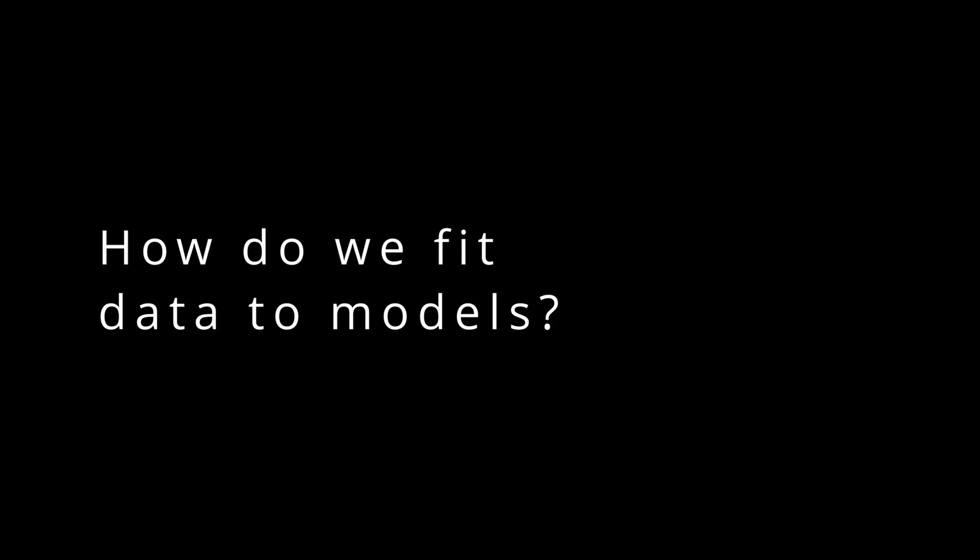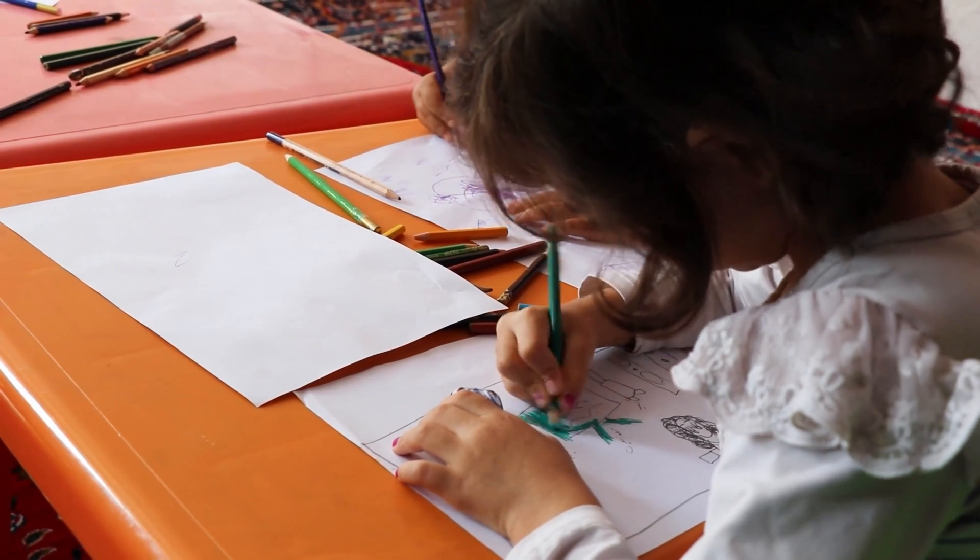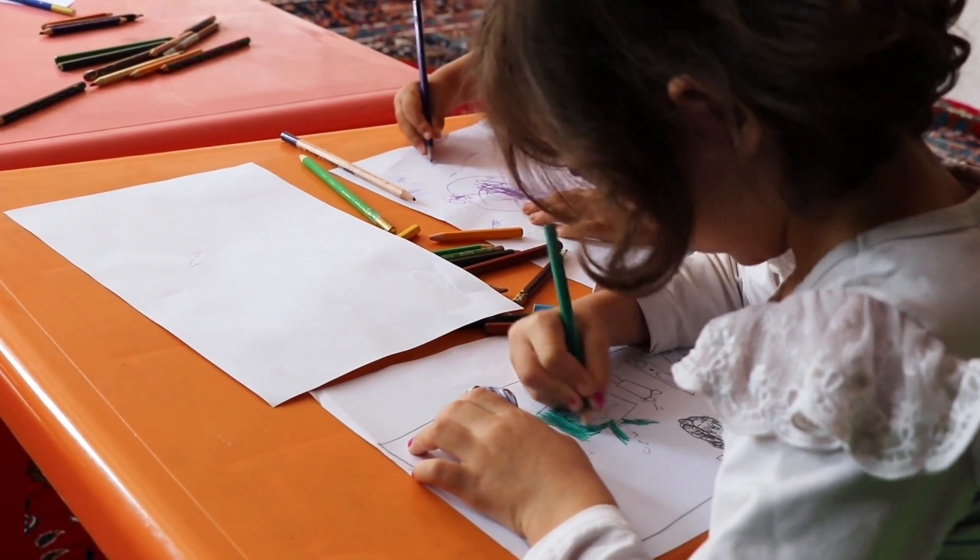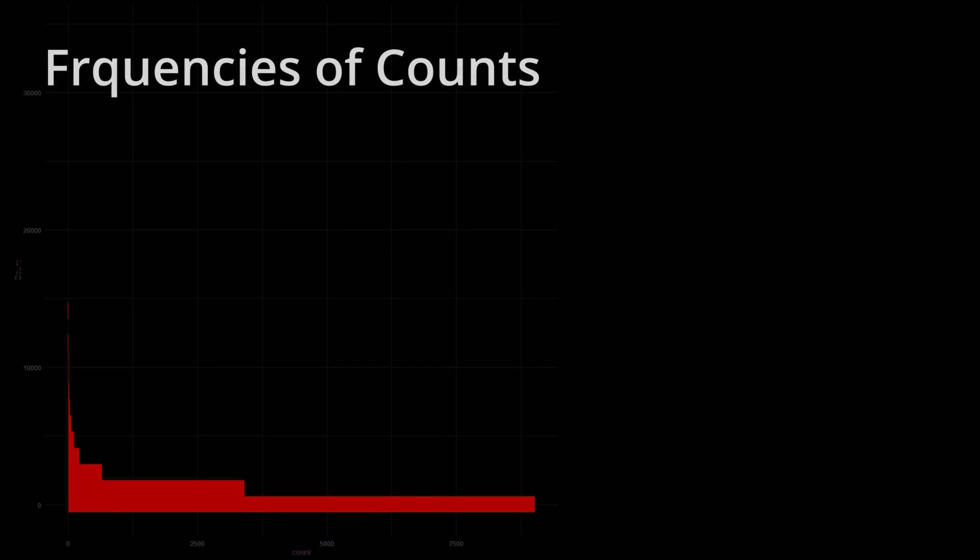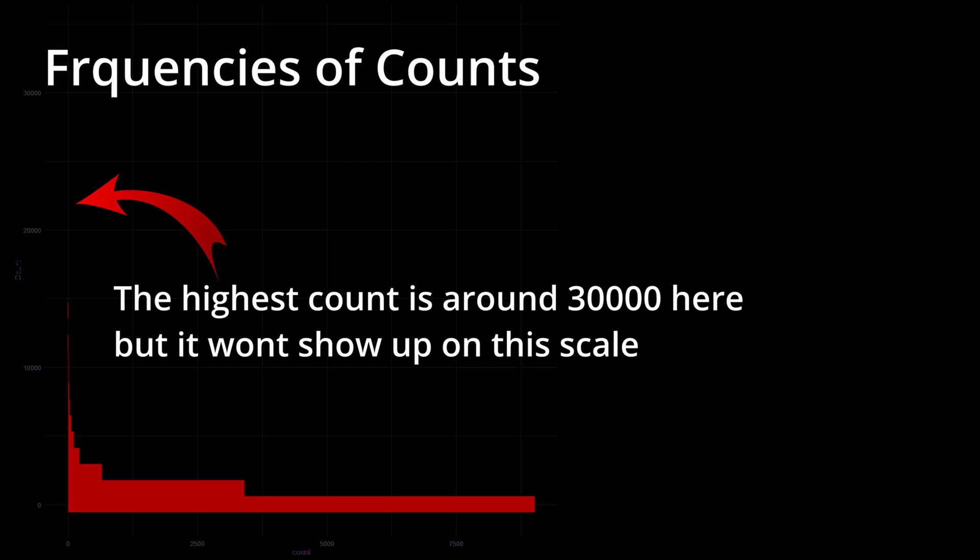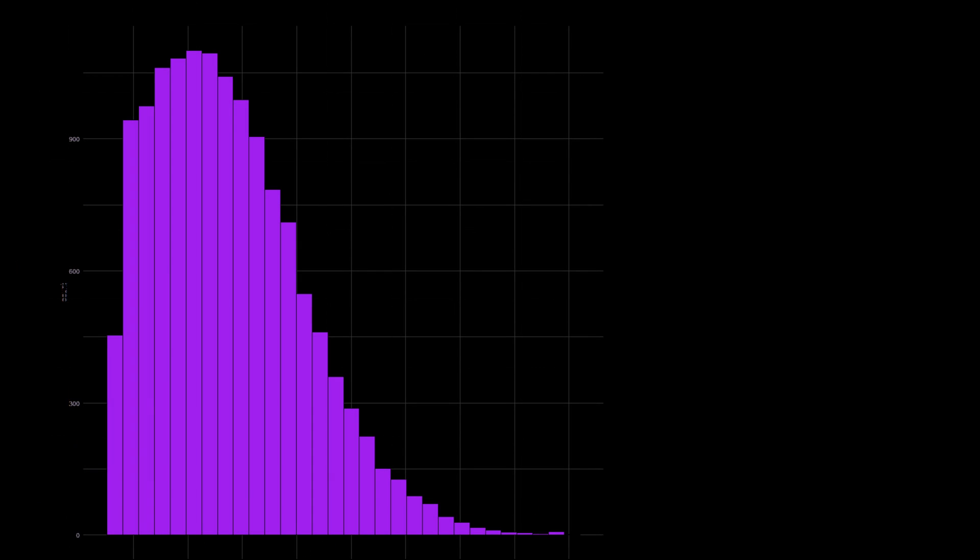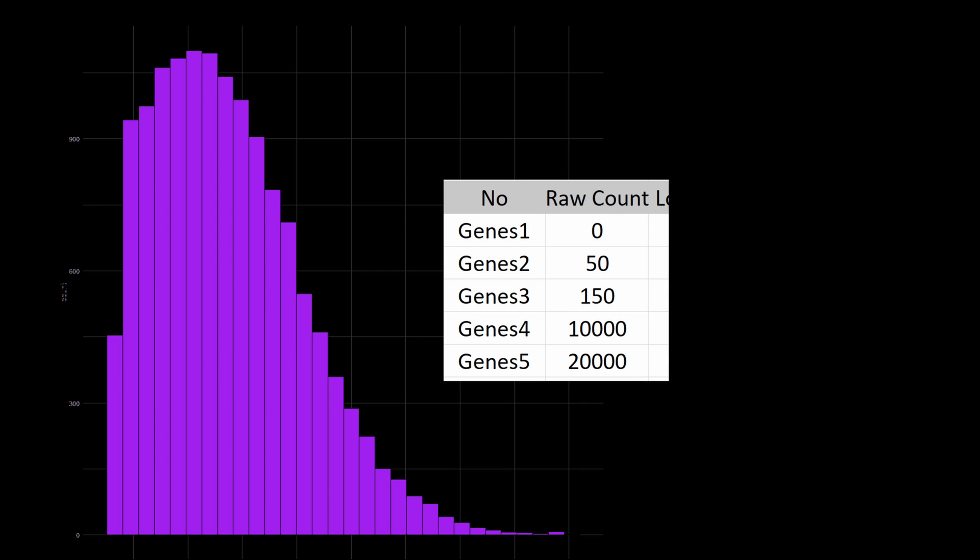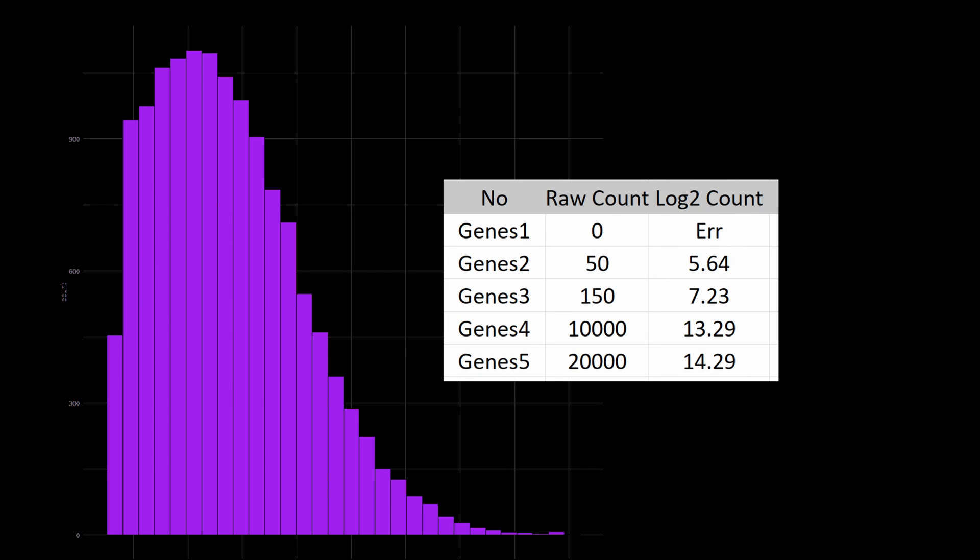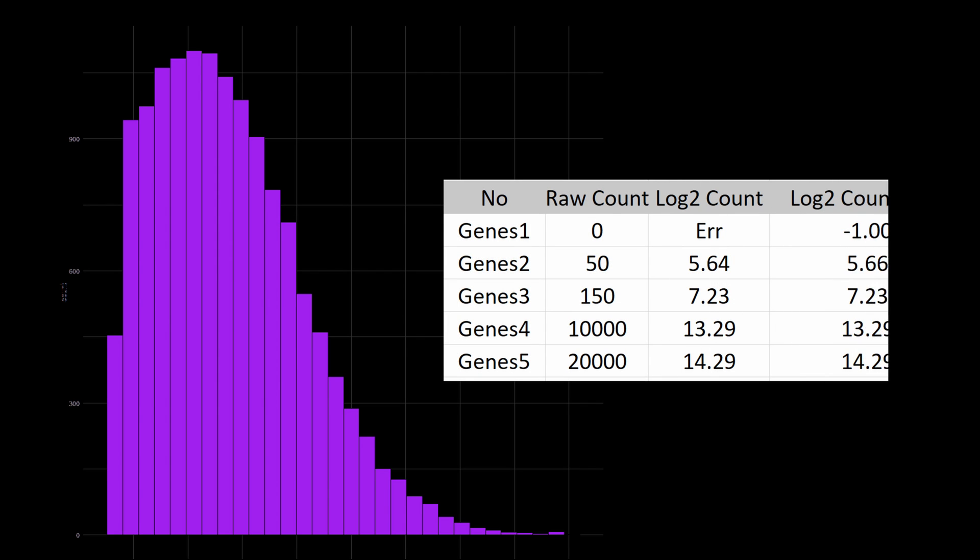How do we fit data to models? Well, we plot them out and try to draw a line through them. For gene expression data, most of the counts are actually so low that you can't see anything on the y-axis. To solve this, we can run a log2 normalization on the dataset, and to avoid the negative infinity problem, we can add a correction factor of 0.5.